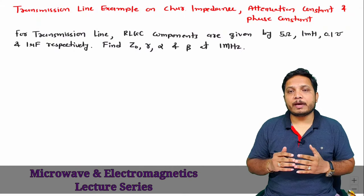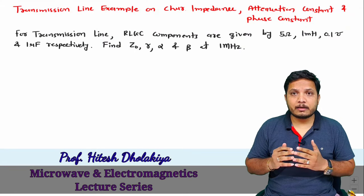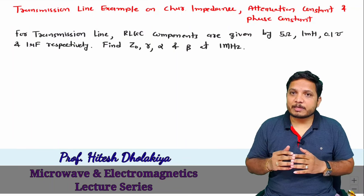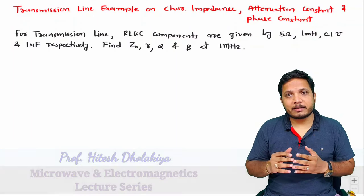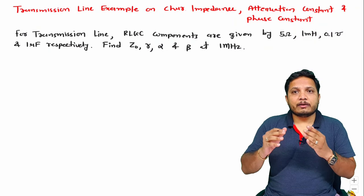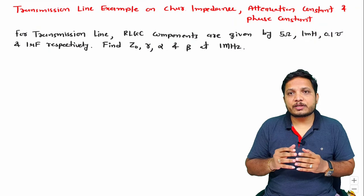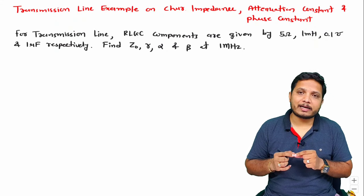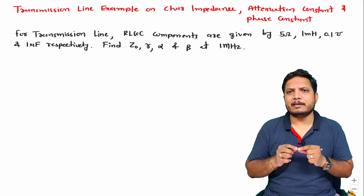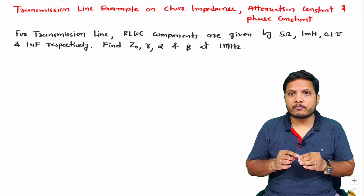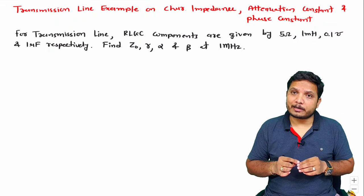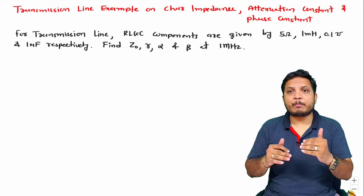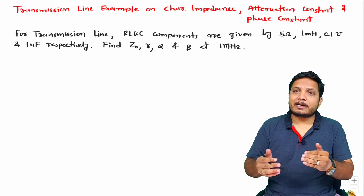Welcome to the Microwave and Electromagnetics lecture series. Professor Dolakia is going to explain a transmission line example covering characteristic impedance calculation, phase constant, and attenuation constant calculation. When solving this type of problem, there are a few very basic things to take care of, like how to use a calculator. This video explains how to solve this type of problem step by step.